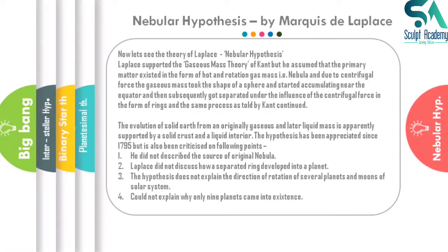Laplace assumed that primary matter existed in the form of a nebula itself — a hot, rotating gaseous mass that existed forever in space. He didn't question how the primary matter came to be or how rotation began. Due to centrifugal force, the gaseous mass took the shape of spheres and started accumulating near the equator, then subsequently got separated under centrifugal force in the form of rings — the same process as described by Kant.